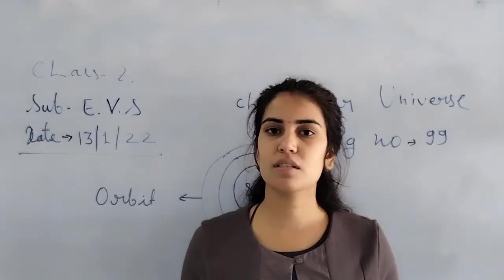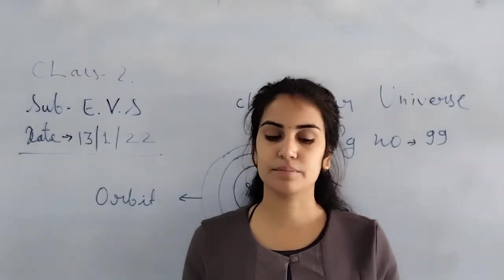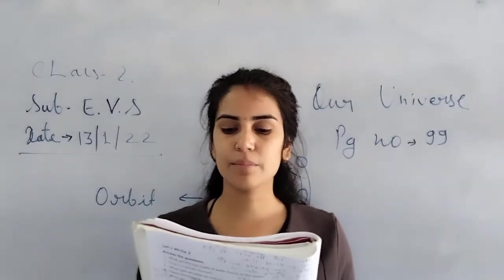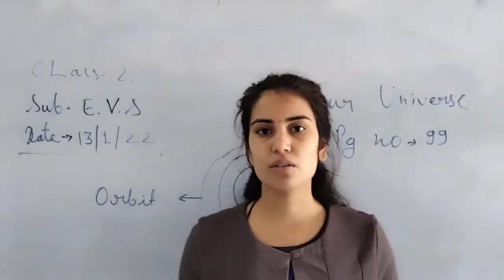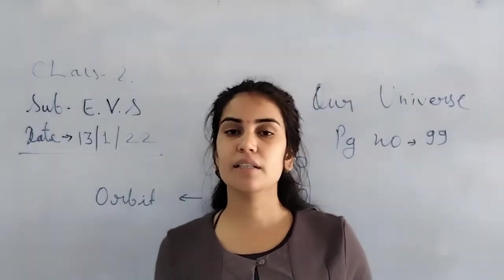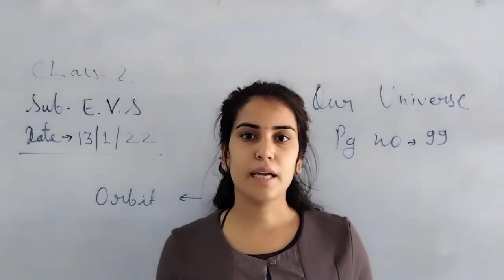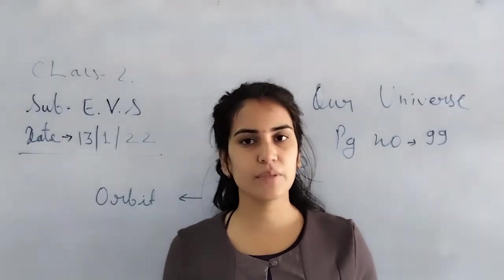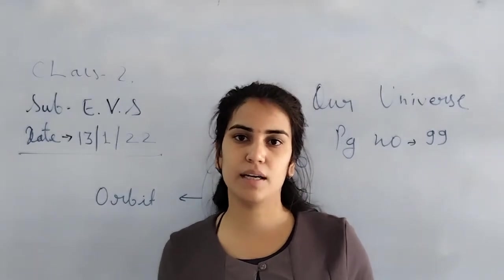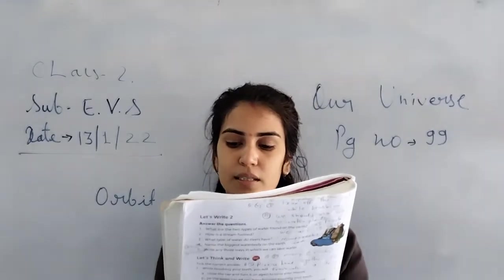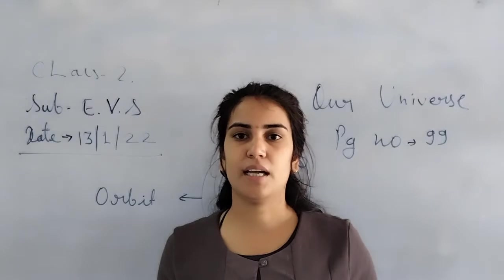How many planets in our solar system? Eight planets. Now we are reading. The Earth is part of the solar system. In a solar system, the sun and eight planets. Solar system is created by sun and eight planets. You can see one picture here on page number 99.